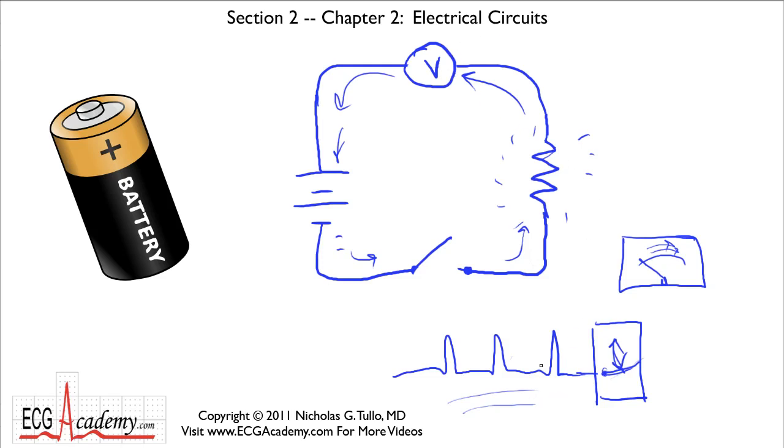So imagine an ECG machine is kind of like a voltmeter, or a means of displaying on paper, or of course on a screen if you're looking at a cardiac monitor, the variation in the voltage that's flowing around the circuit, the circuit being of course the human body somehow.